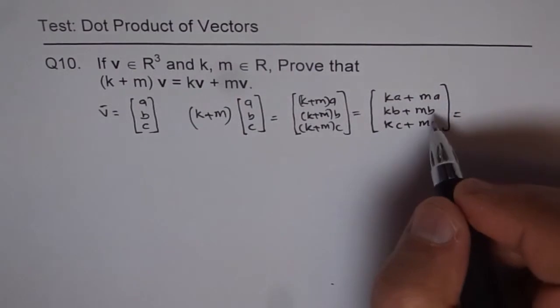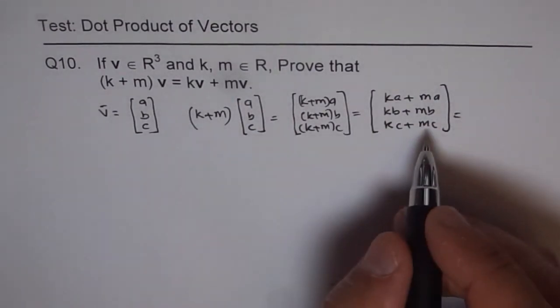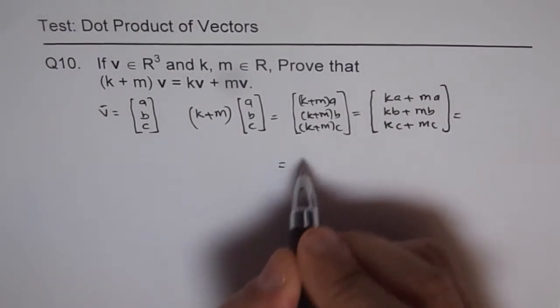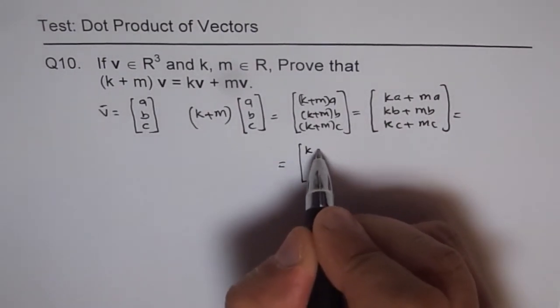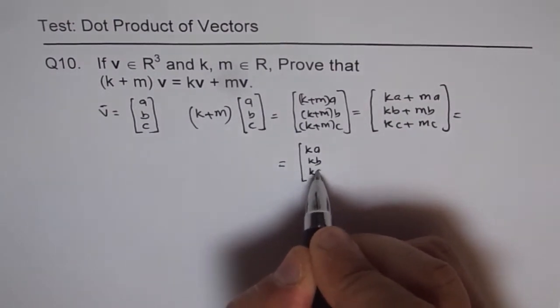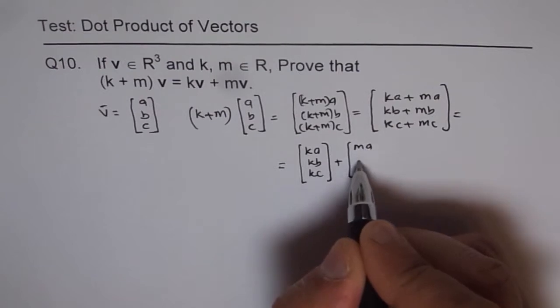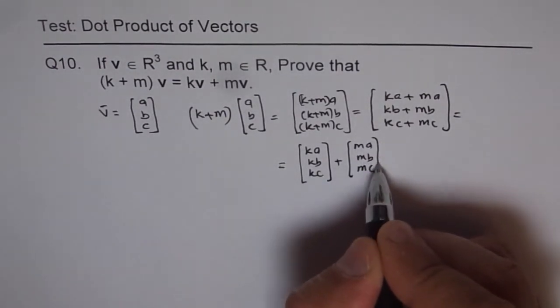Which you can write as sum of two vectors. That's the distributive property. And I'll write it here now. So which could be written as equal to (ka, kb, kc) plus (ma, mb, mc).